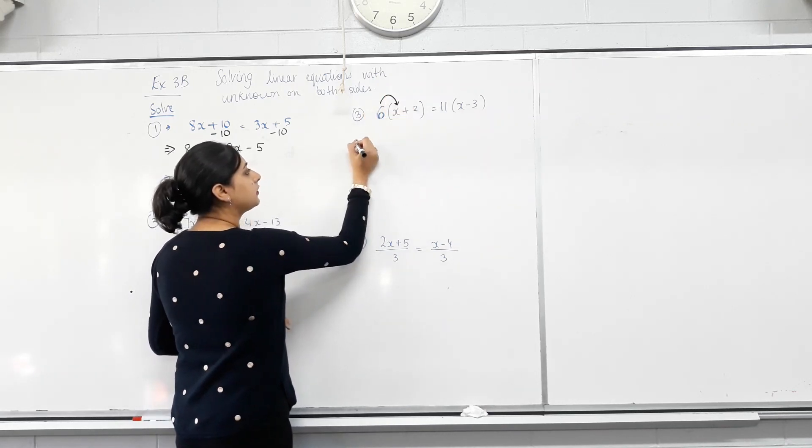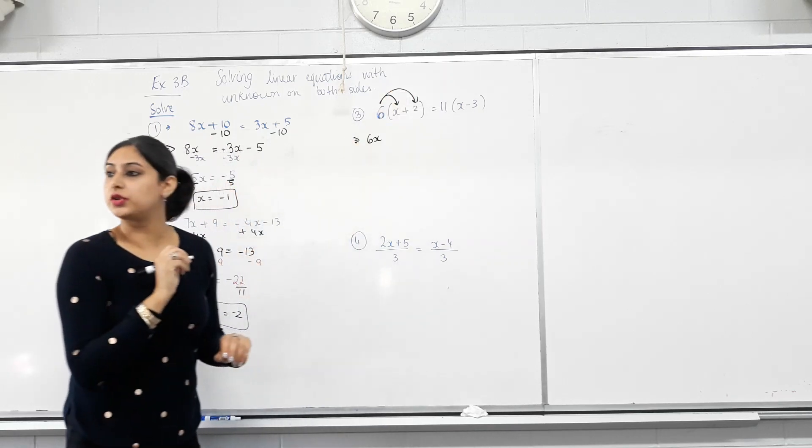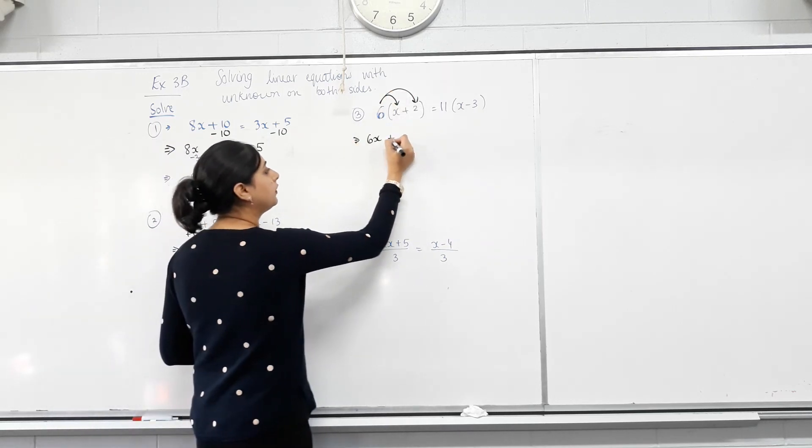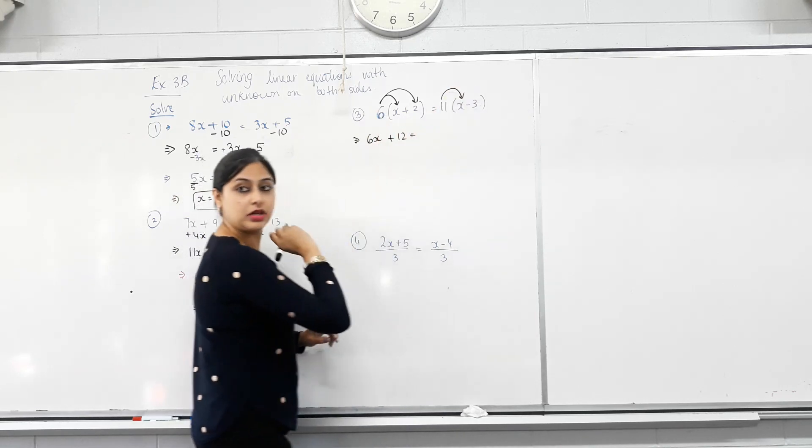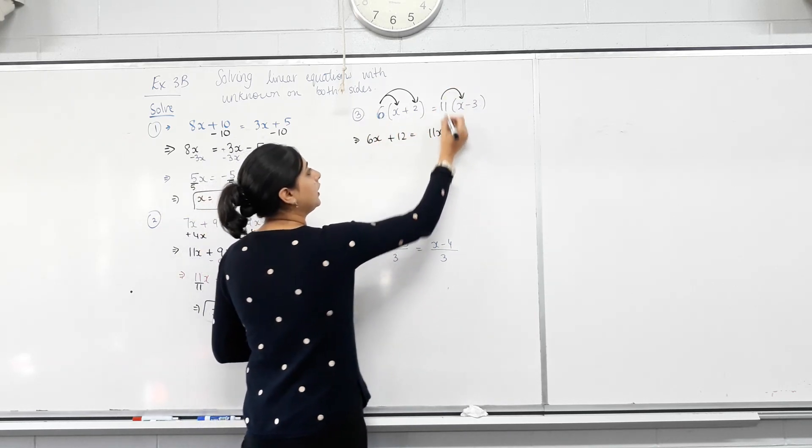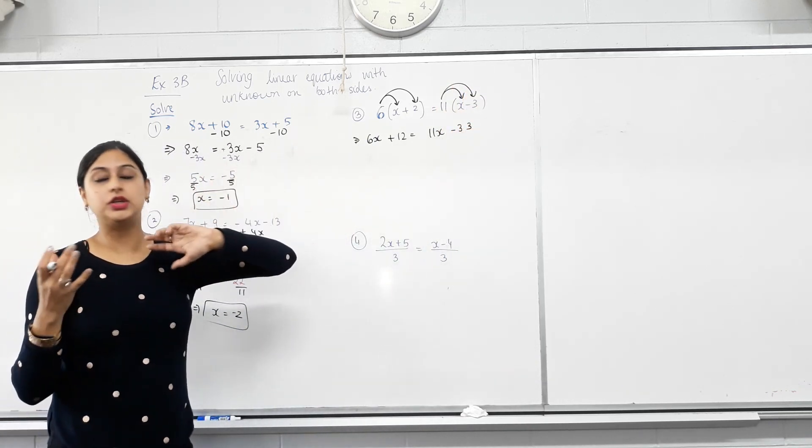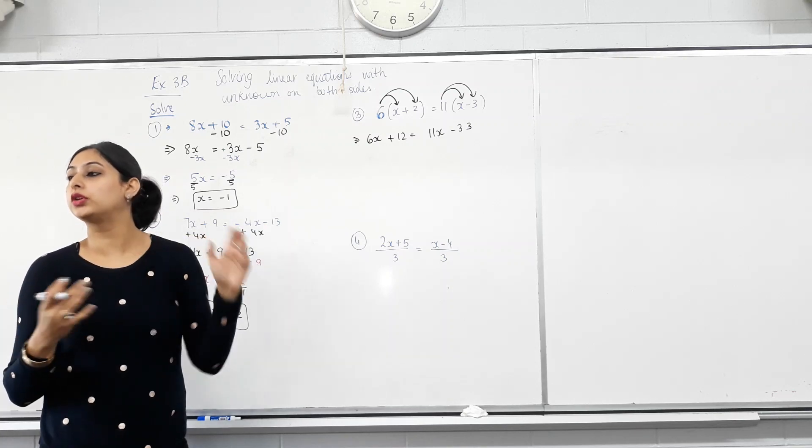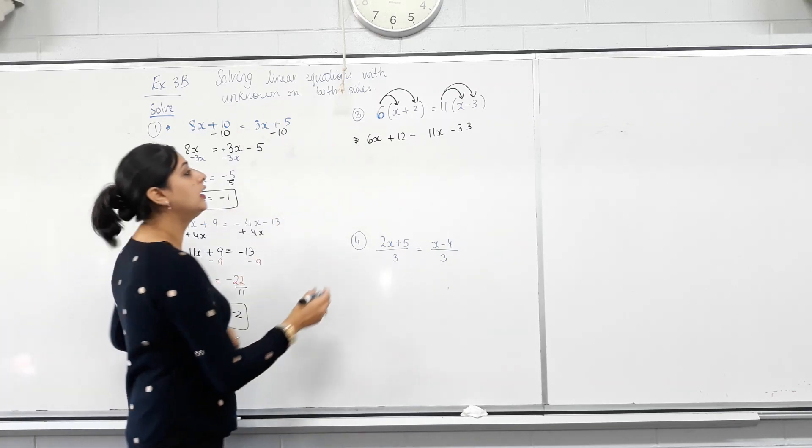6 times x. 6 times positive 2. Plus 12. Same thing. Expanding there. 11 times x. 11 times negative 3. So the method you use for an equation depends on what your question is. So what kind of numbers. So we don't want fractions. We expand it.